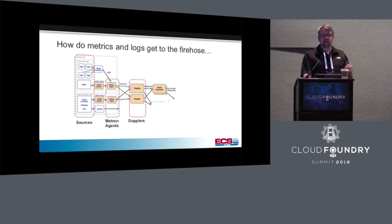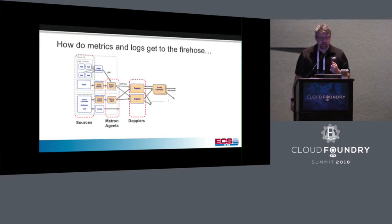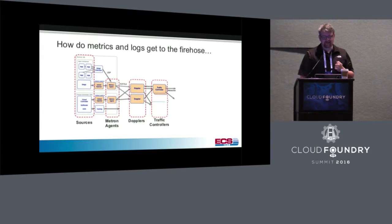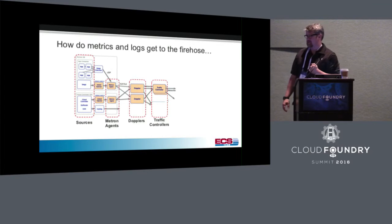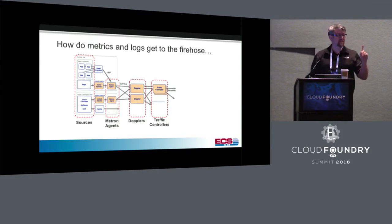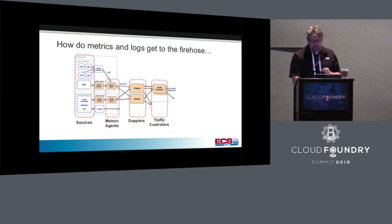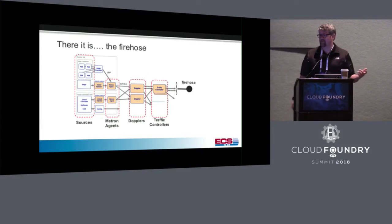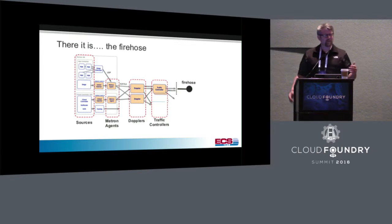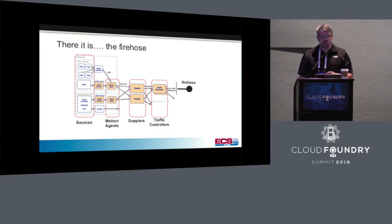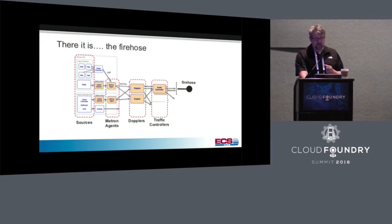Then you have another collection point across AZs — you have Dopplers. And on top of that, you have Traffic Controllers. How many layers of abstraction? Well, they're all pretty cool because at the end of it, there's the Firehose. You hear 'Loggregator' and wonder what that is, and you hear all these little agents. They're all basically funneling down to the Firehose at the end.